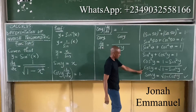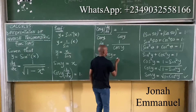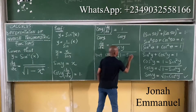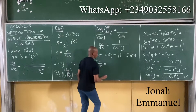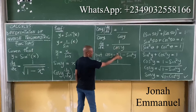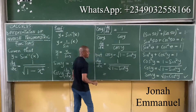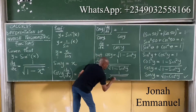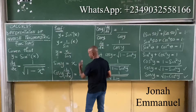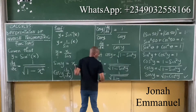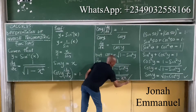Now I already showed that cos y equals the square root of 1 minus sine squared y. So dy/dx equals 1 over the square root of 1 minus sine squared y. Since sine y equals x, then sine squared y equals x squared. Therefore dy/dx equals 1 over the square root of 1 minus x squared. That's the proof.